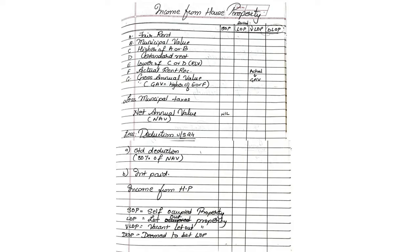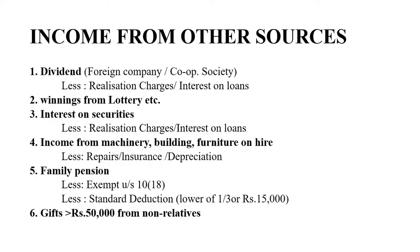If in the question they tell you to compute total income and they have given you house property, then after finding income from house property the next step is to find income from other sources. Other sources include dividend, winning from lottery, interest from security, income from machineries or all other assets, family pension, and gifts which are more than 50,000 from non-relatives.